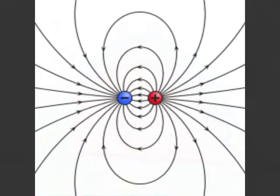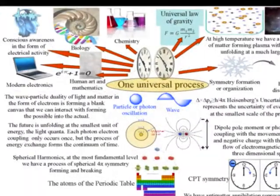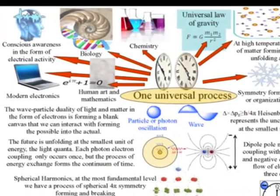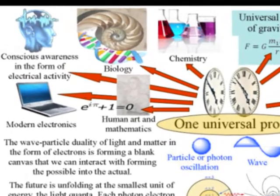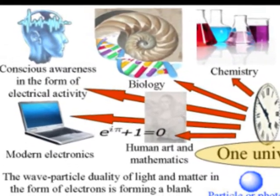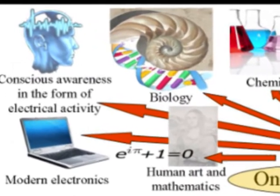The second reason why this theory is difficult to comprehend is represented in the top left-hand corner of the diagram, and it is because conscious awareness, in the form of electrical activity in the brain, is an integral part of this process.